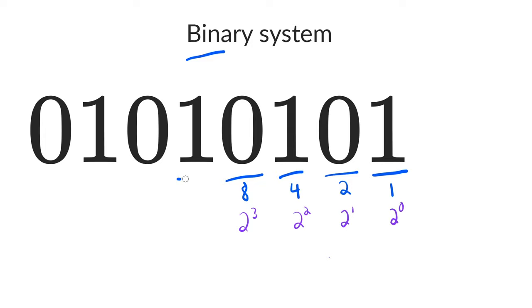One way of doing that is just to double the previous places. So this place here is 16, this place is 32, this place is 64, and this place is 128.